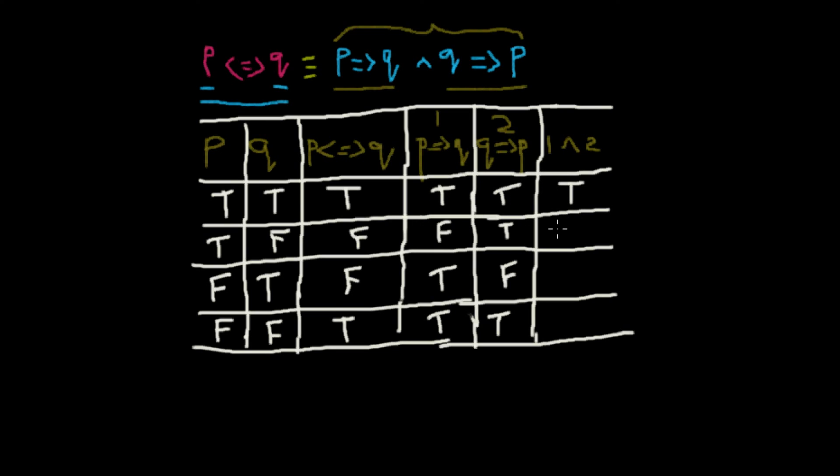Even if one of the variable is false, the truth value of the statement will be false. That means P implies Q is false and Q implies P is true, the entire statement will become false. Again we see that one of the variable is false, so the entire statement will become false. Both are true, so this entry will be true.